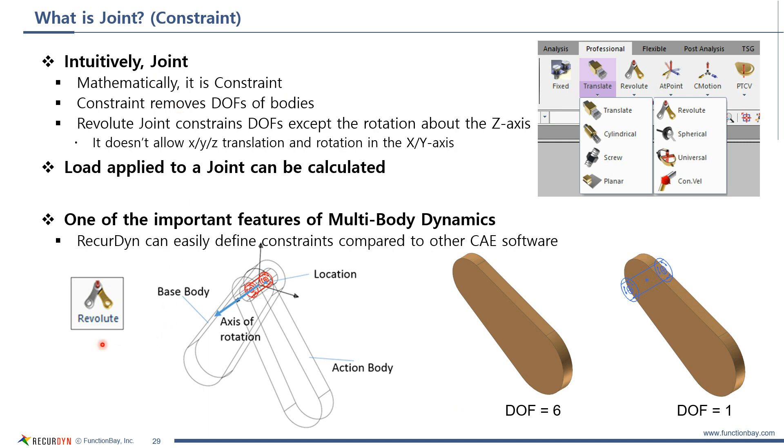For example, revolute joint constrains all degrees of freedom except the rotation about z-axis. If revolute joint is created on a body whose number of degree of freedom is 6, the body does not move in the x, y, z direction, and there is no rotation about x and y axis. It means the number of degree of freedom becomes 1.